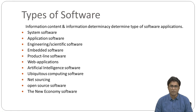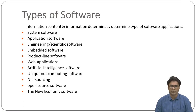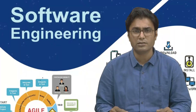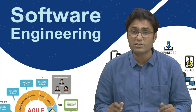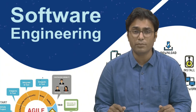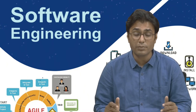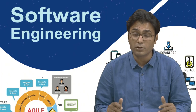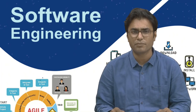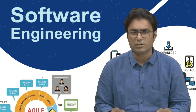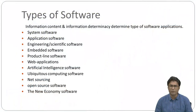Embedded software resides within a product or system and is used to implement control features for end users. It generally has limited functions. Product line software provides specific capability for use by many different customers, addressing mass consumer markets — for example, word processors and spreadsheets.